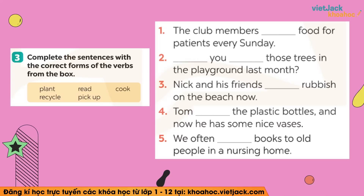Bài tập này sẽ hơi khó một chút nên là các bạn sẽ dừng video lại khoảng chừng 10 phút và hoàn thành 5 câu này. Câu số 1: mình có từ food (thức ăn) — động từ thích hợp là cook (nấu ăn). Và ở đây mình có keyword Every Sunday (chủ nhật hàng tuần) — khi mà mình dùng every + danh từ thì chắc chắn đây là thì hiện tại đơn. Cái việc cứ lặp đi lặp lại mỗi chủ nhật. Vì vậy: The club members cook food for patients every Sunday.